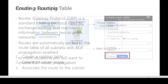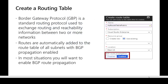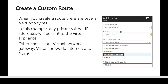During route table creation, there is an option called BGP route propagation. BGP, or Border Gateway Protocol, is a standard routing protocol to exchange route information between multiple networks. When enabled, the route table is added to all subnets it is applied to, and this is enabled in almost all cases.